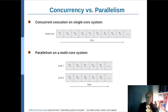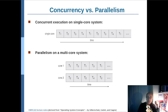In the case of parallelism on a multi-core system — for example with two cores — you still have those four tasks, but while T1 is executing on core 1, T2 is also executing on core 2. So here we have both concurrency and also parallelism.